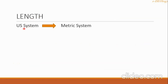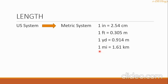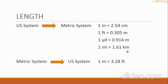We have some conversions here from US system to metric system. The first is 1 inch equals 2.54 centimeters. The second is 1 foot equals 0.305 meter. The third is 1 yard equals 0.914 meter. The fourth is 1 mile equals 1.61 kilometers. We also have one conversion from metric to US system: 1 meter equals 3.28 feet.